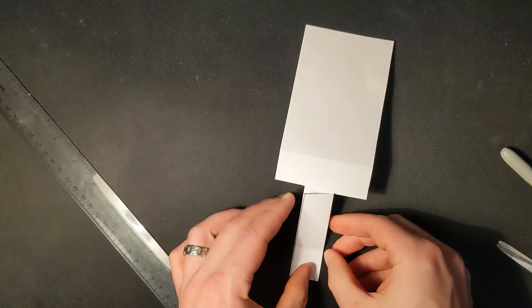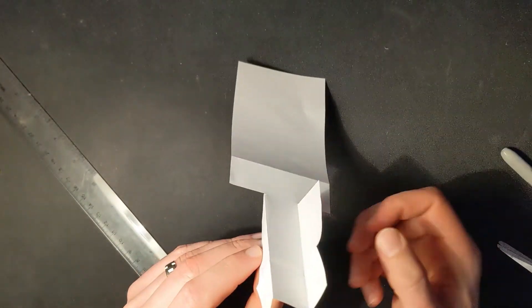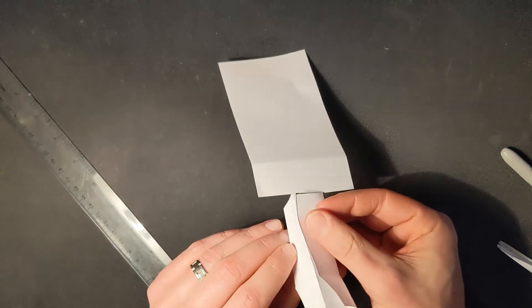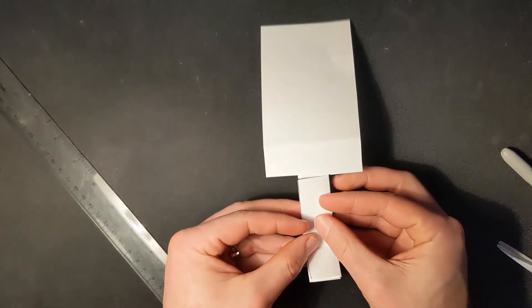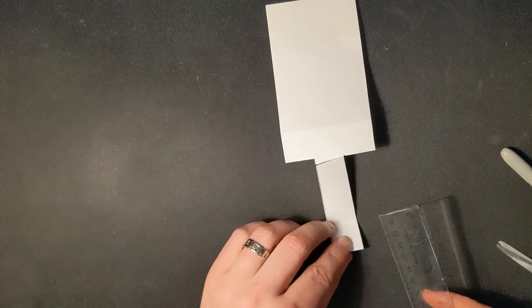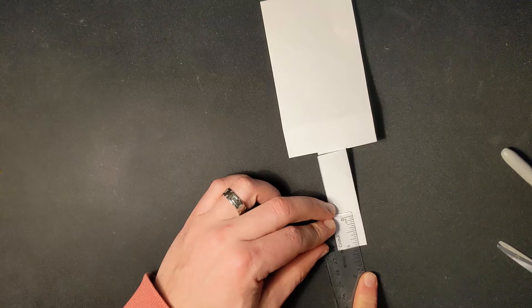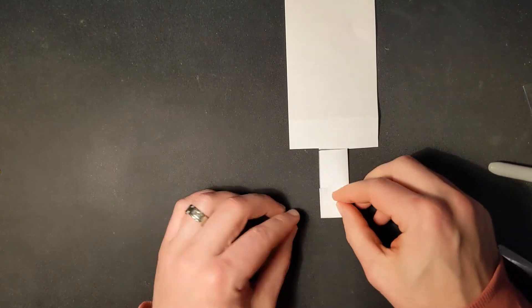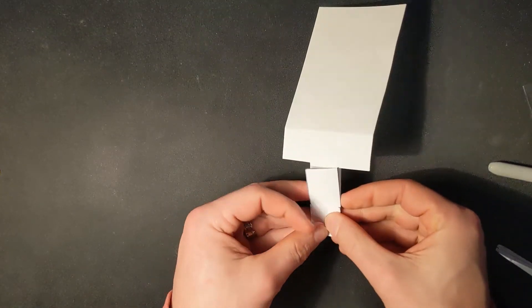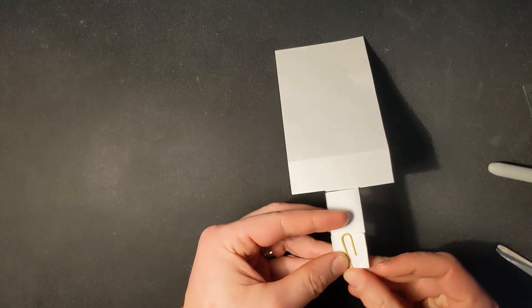So once again, I've zigzagged this. One of the flaps that I cut goes forward, the other one goes to the back, and then I've taken about an inch, and I estimated this, but I'm guessing it's right on that inch line. Yeah, it is. And I've gone up like that, and now I'm going to put a paper clip on that flap.